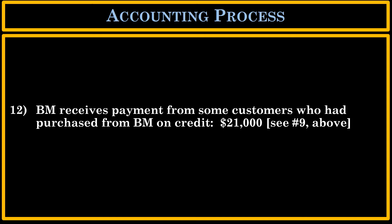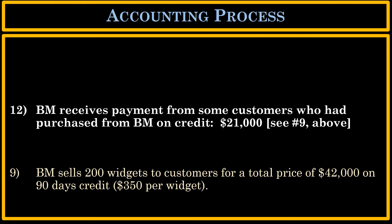In our next transaction, BM receives payment from some customers who had purchased from BM on credit — we're receiving $21,000 from various customers. In transaction 9, this is where we sold to customers on 90 days credit. At that time we booked that as a sale of $42,000, and we also booked $42,000 as an account receivable. Let's go account for transaction number 12.